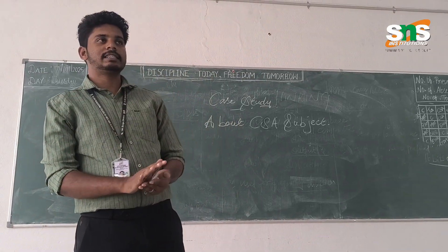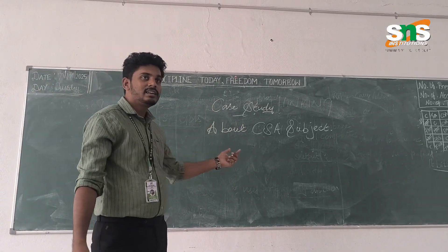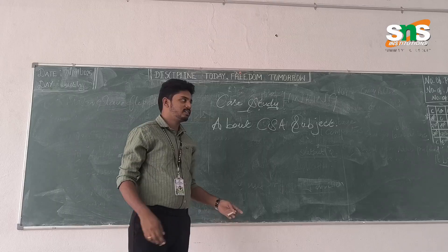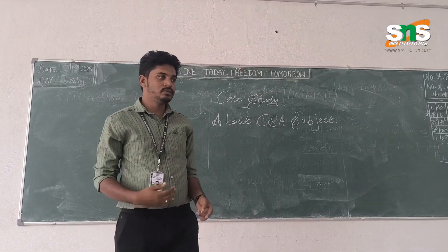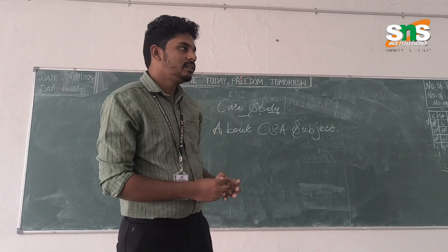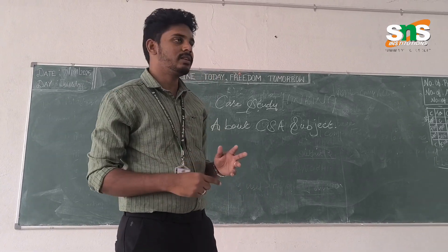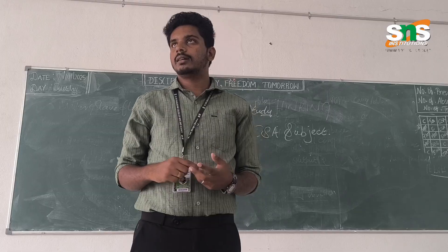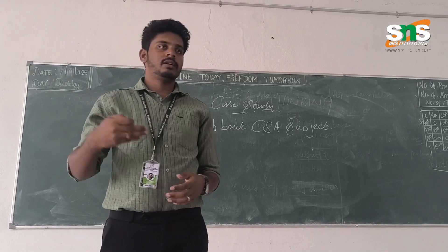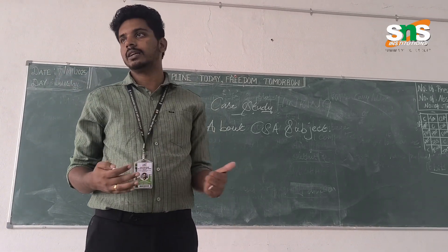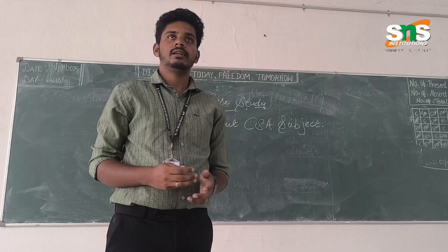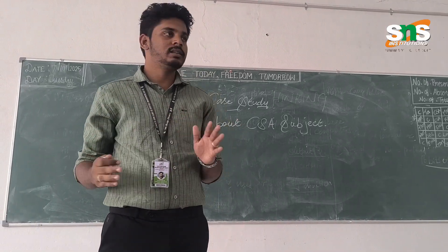Good afternoon everyone. Today we have discussed one topic as a case study, where we cover our subject CSA, Computer System Architecture. It is a part of the CSA subject — what we learn and what we do in our classes. The list of our CSA subject is a combination of circuits and the numbering system with more topics. Now one by one you can come to this stage and explain about the CSA subject, what you learn and what you do. In one semester we can learn the CSA subject for our examination.